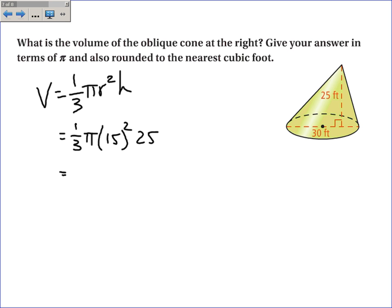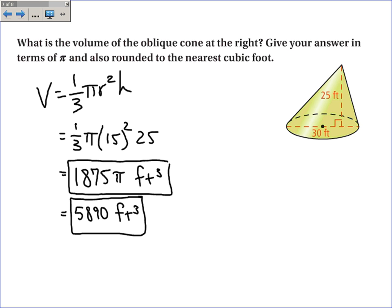In terms of pi, I will kind of forget about pi for a second, and do one-third times 15 squared times 25, and get 1875 pi feet cubed. This is my answer in terms of pi. Now, if I multiply this times pi, I get 5,890, rounded to the nearest foot, cubic feet. And this is the answer, rounded to the nearest foot.